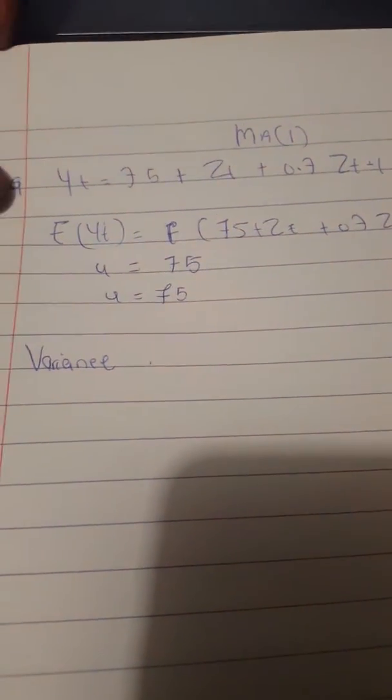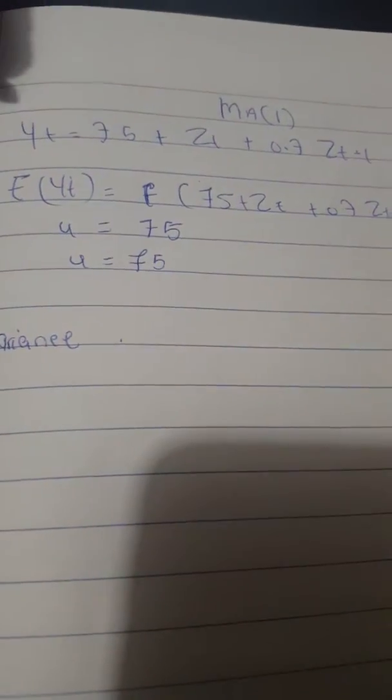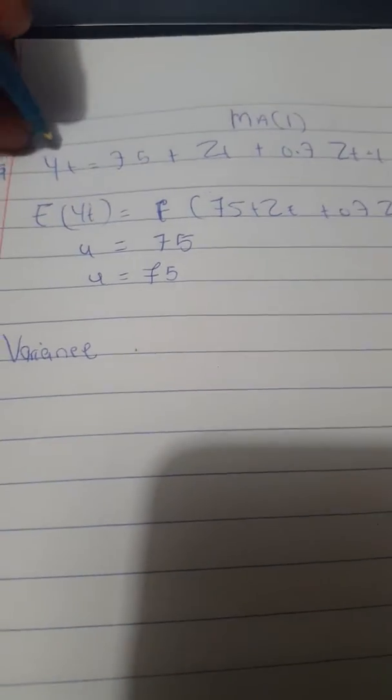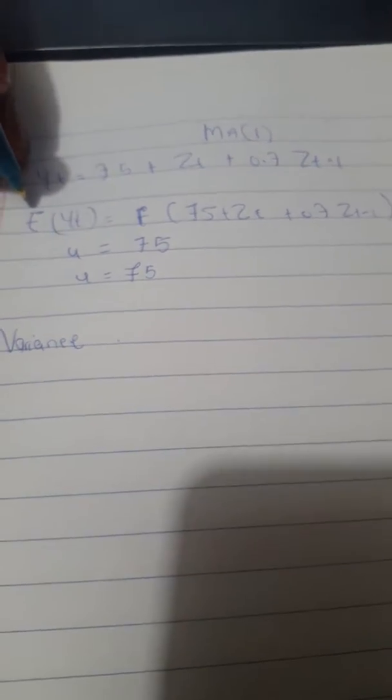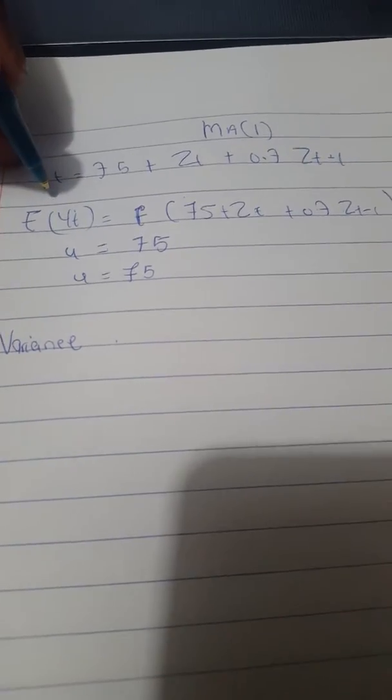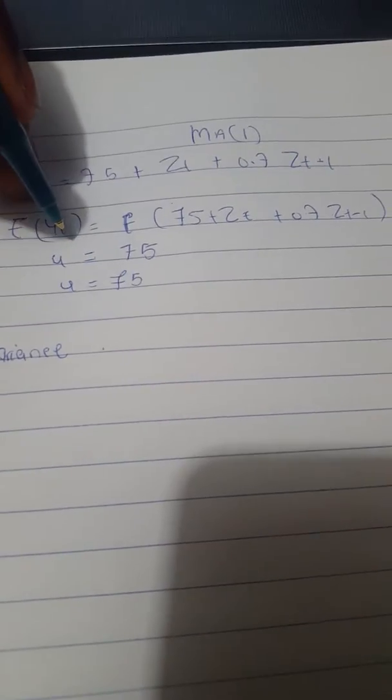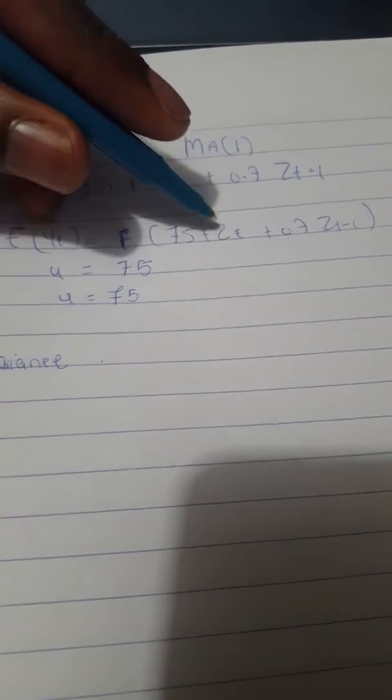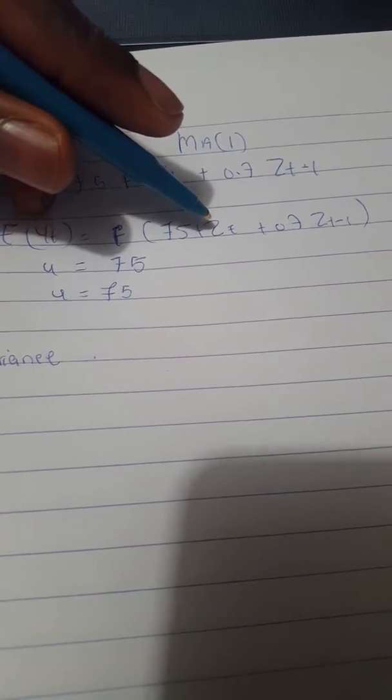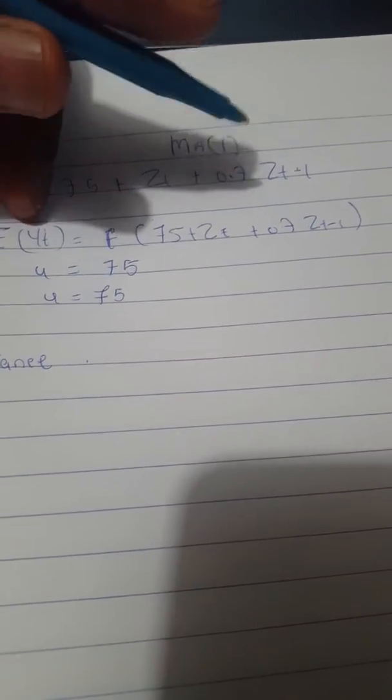So MA1 model, we'll find the mean. So that is, we're finding the expectation of the function. So expectation of Yt is mu and expectation of the Zt is 0 and that's 0. So the mean mu is equal to 75.